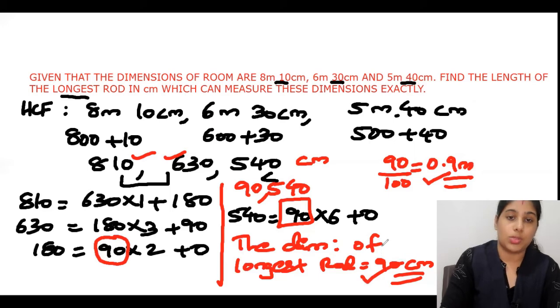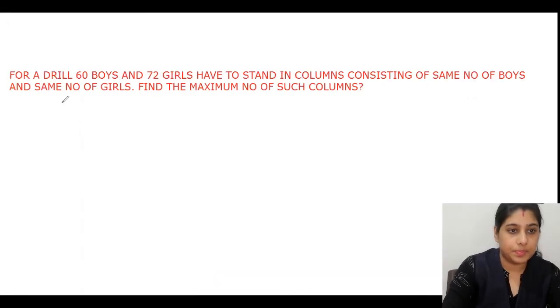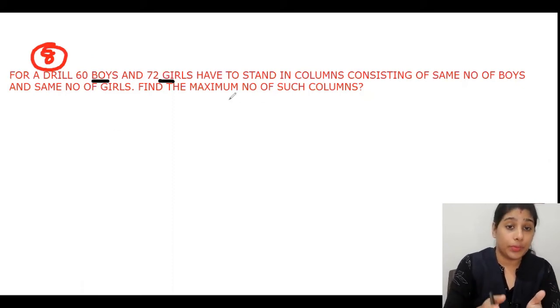Number eight: A drill has 60 boys and 72 girls. We have to arrange them in columns with the same number in each column. Find the maximum number of columns. Here we have to find the HCF.